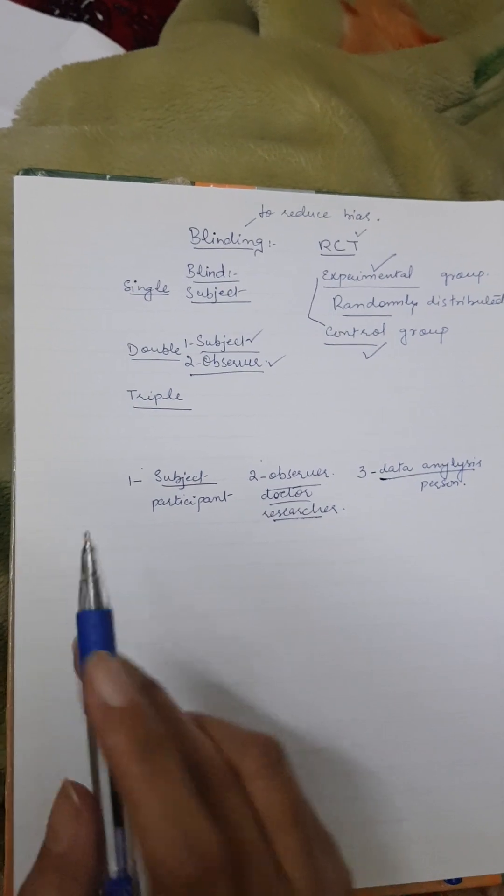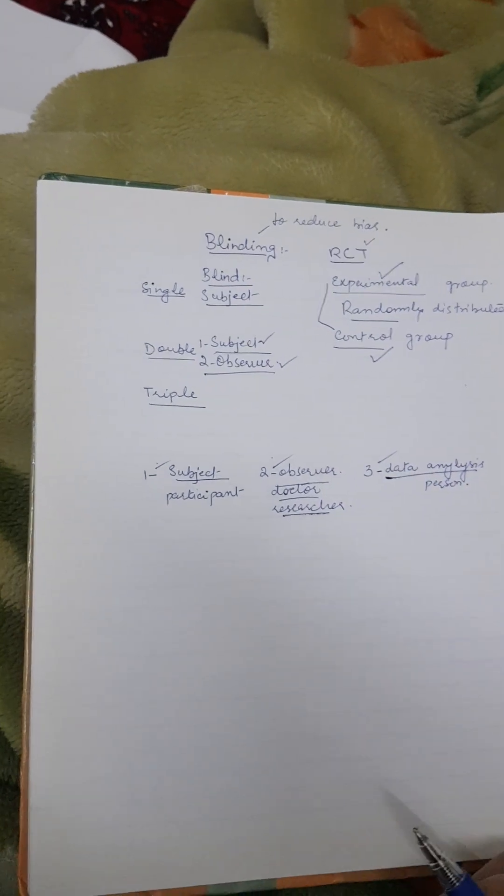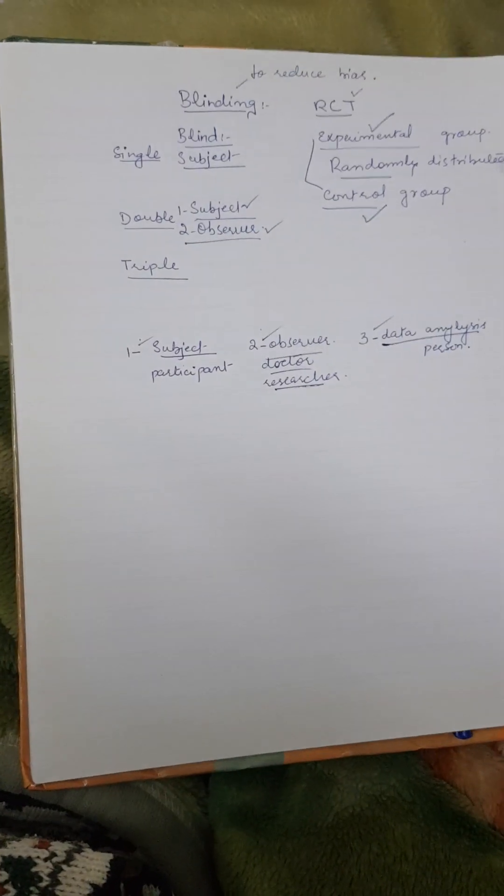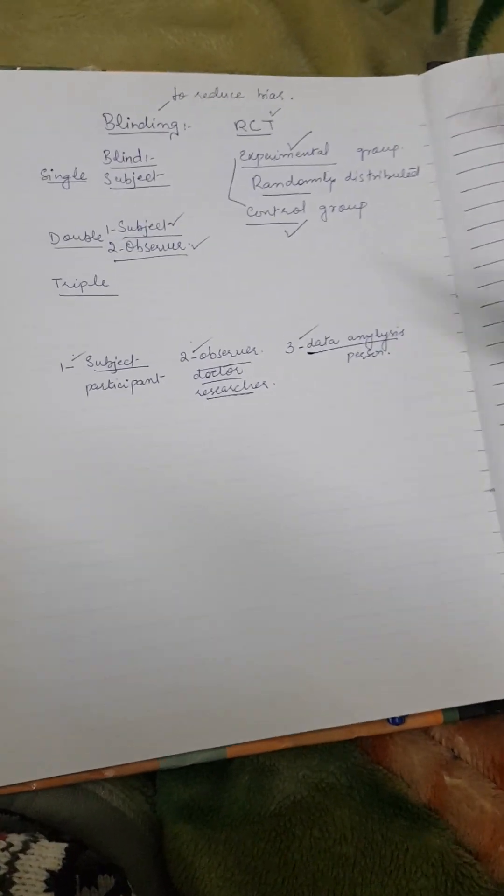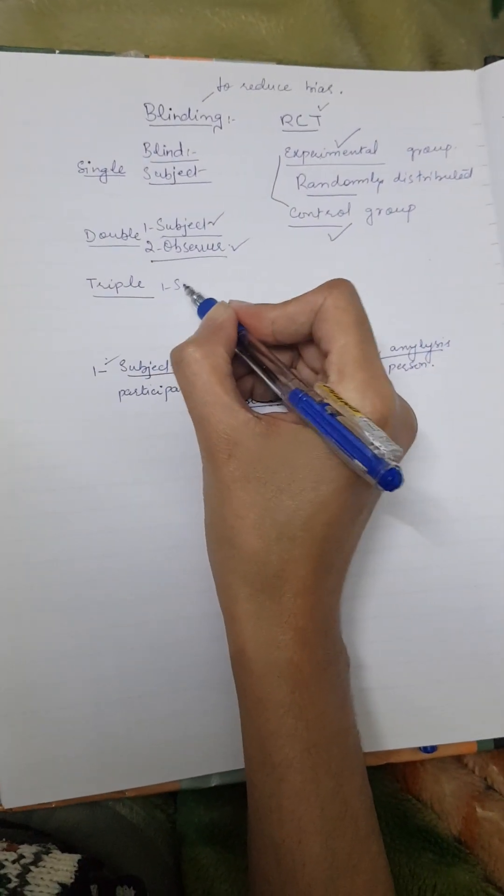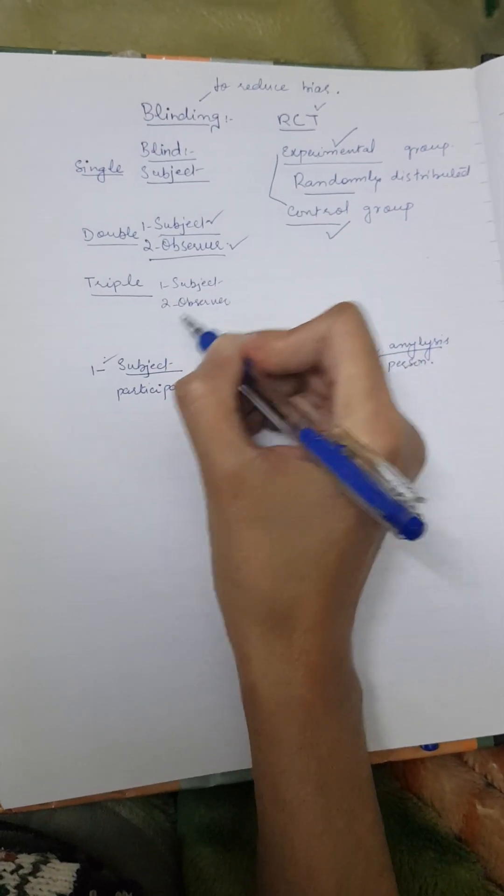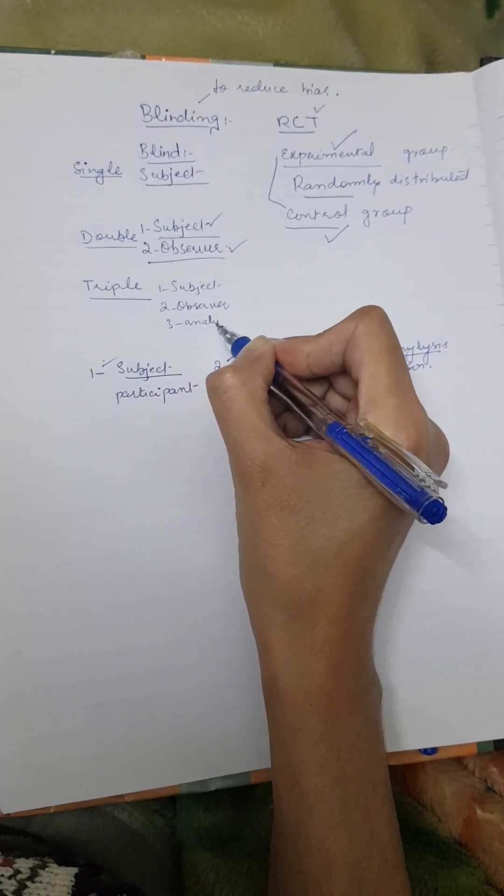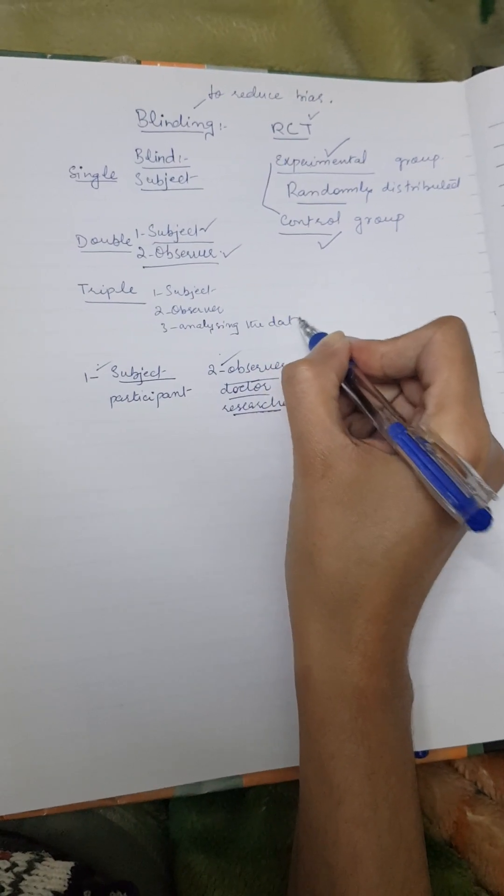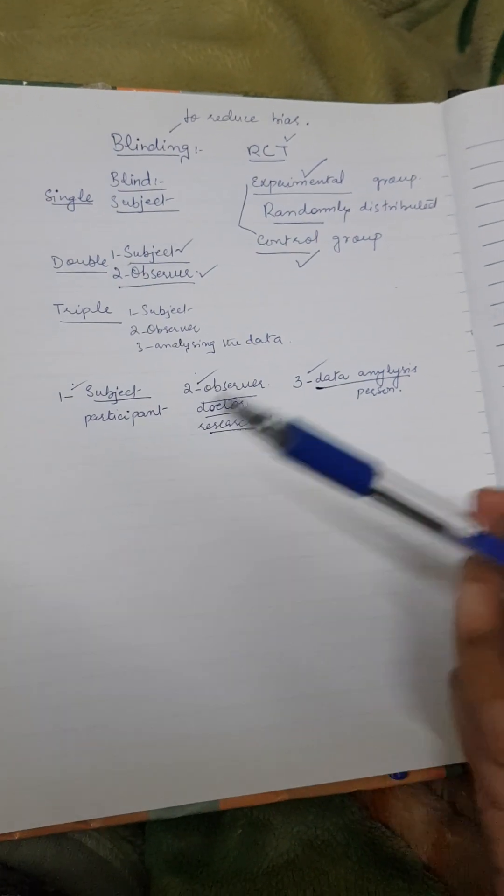Then there is triple blind. In triple blind, the subject doesn't know, observer doesn't know, and data analyzer also doesn't know who is where and what was given. Very high profile studies, when a very high profile vaccine trial is happening or a very high profile new drug is being introduced in the market, the triple blind is used. The subject, the observer, and also the person who is analyzing the data, all three are blind about what's going on.